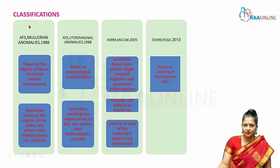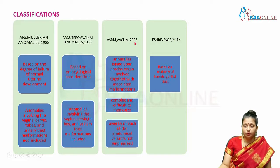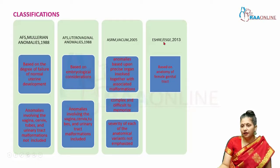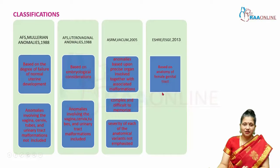Coming to classifications, various systems have been proposed. First came the American Fertility Society Mullerian Anomaly Classification in 1988, then the revised AFS uterovaginal anomalies classification. Then came the ASRM and VACUM classification in 2005, followed by the ESHRE and ESGE classification in 2013. ESHRE stands for the European Society of Human Reproduction and Embryology, and ESGE stands for the European Society of Gynecological Endoscopists. The 2013 classification was based on the anatomy of the female genital tract.